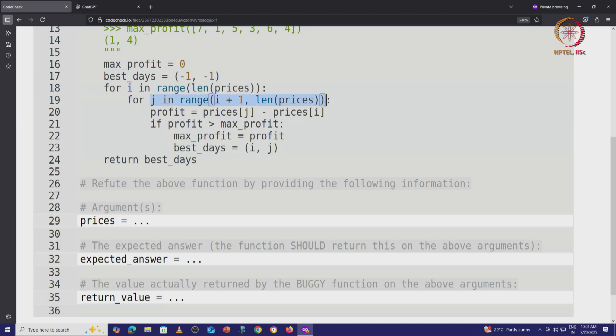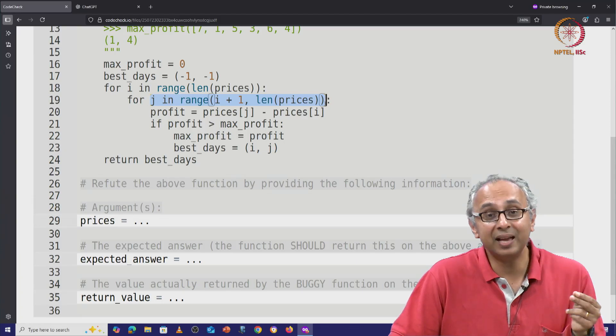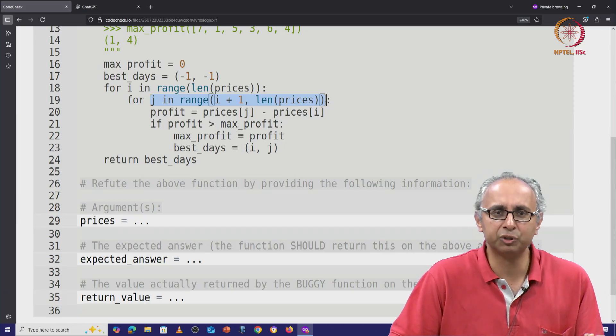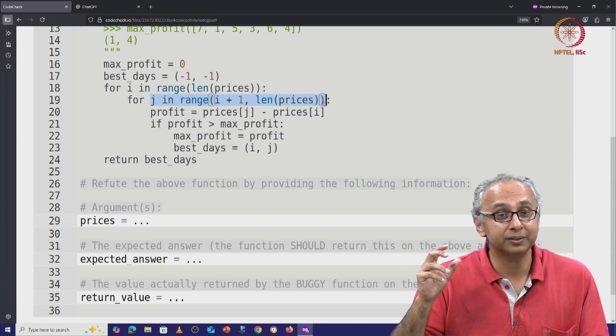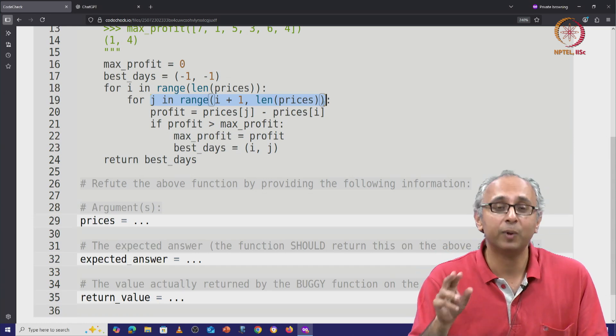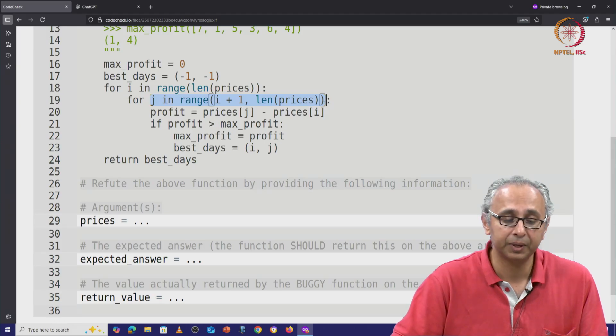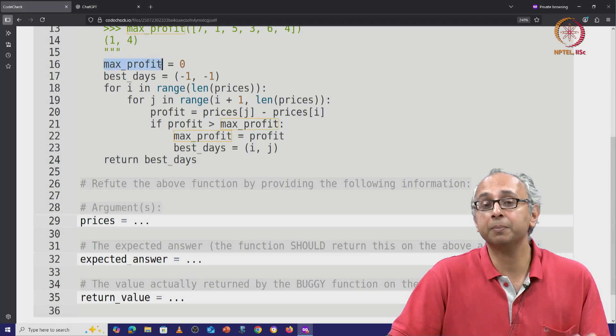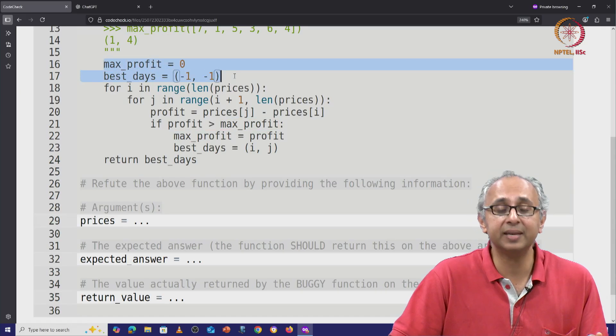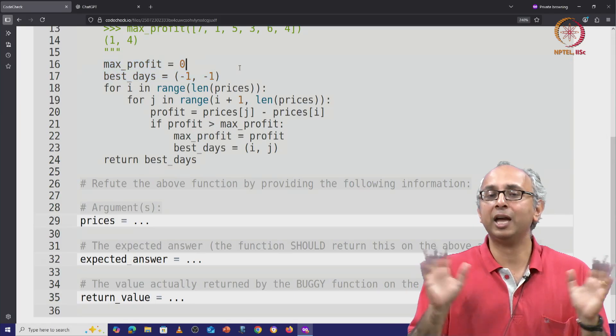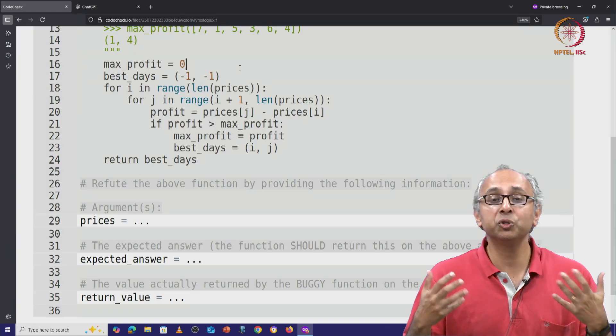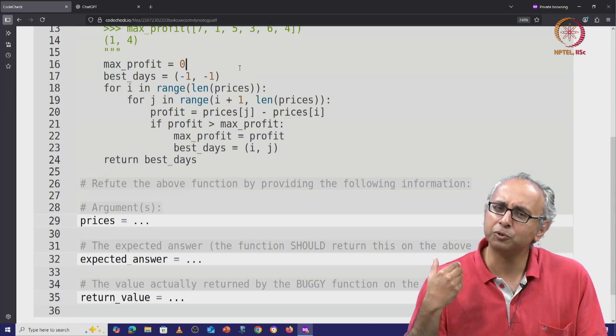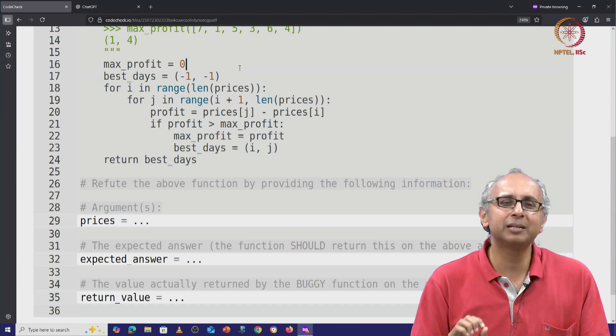And then for j, that comes after i. This is critical because remember we can only sell after buying. So day i is going to be the day on which we buy and day j is going to be the day on which we sell. So this is pattern 3. It is trying all possible pairs i and j where i comes first and j comes later. Now before we look at the body of these for loops, let's quickly take a look at how we have initialized our variables. We have said max profit is 0 and best days is minus 1, minus 1. So this is like saying we haven't yet seen any opportunity to make profit.